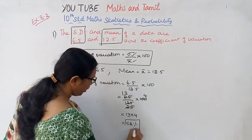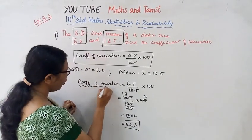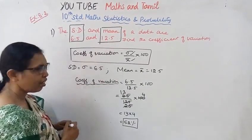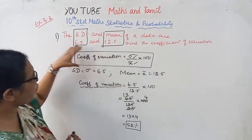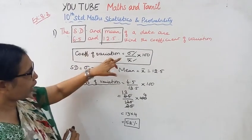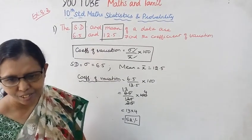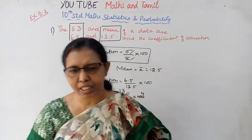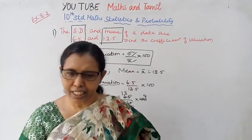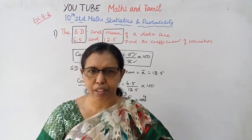52%. Coefficient of variation is 52%. If you remember the formula and apply the values, you'll get the answer. This channel helps you to get 100%. Please subscribe to the channel and click the bell button.